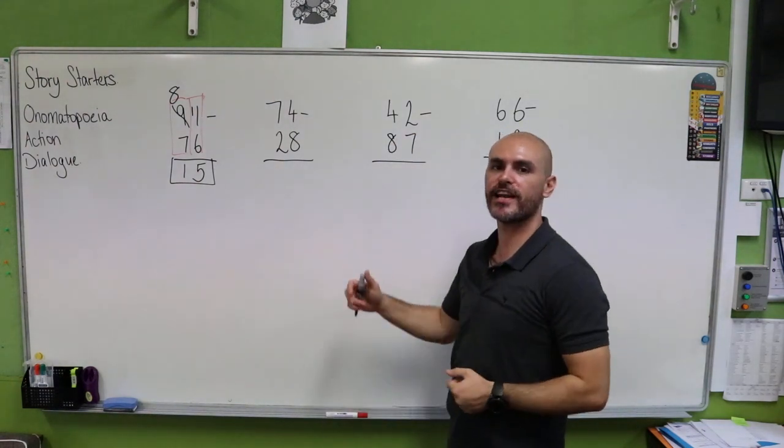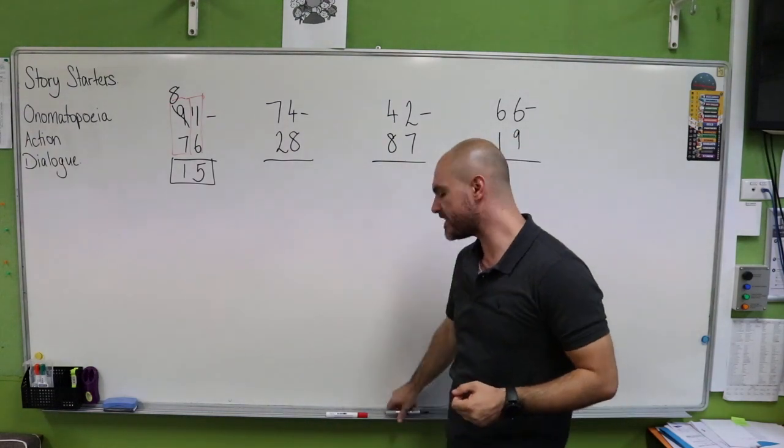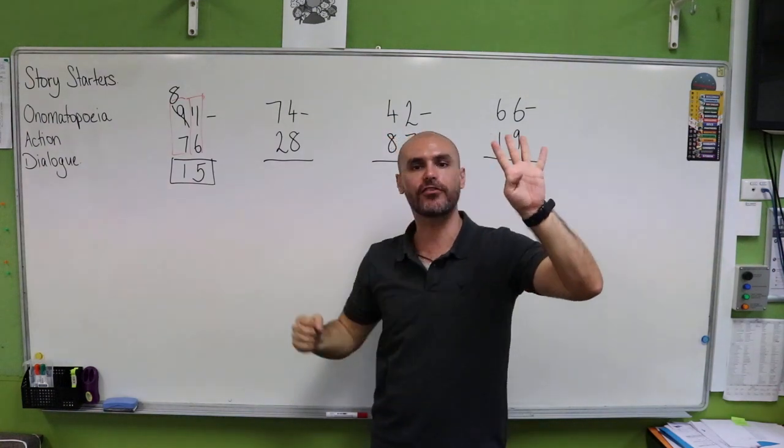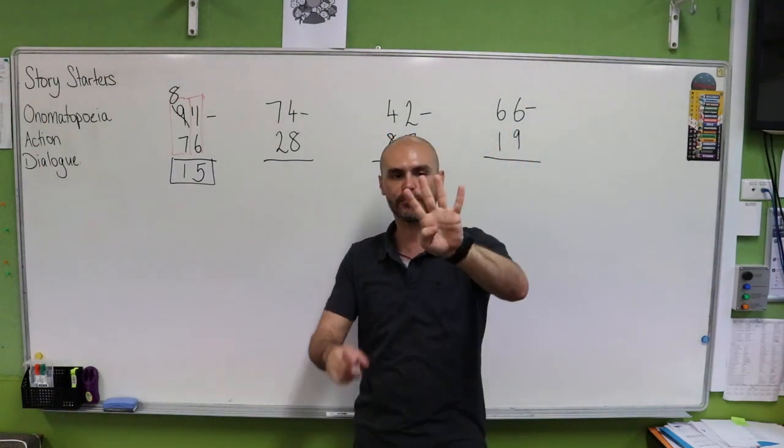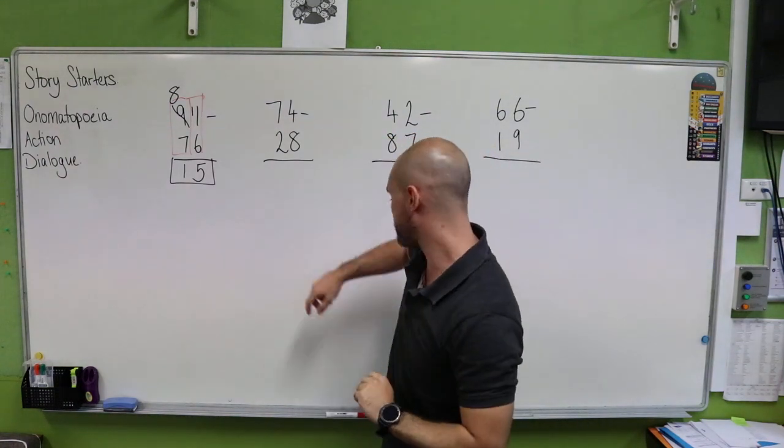Let's try that again with our next problem. We have 74 take away 28. Now if I have four, can I get eight from it? No, I can't because four is smaller than eight. So we're going to need to borrow.